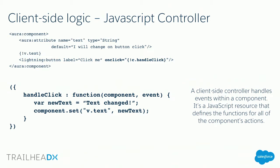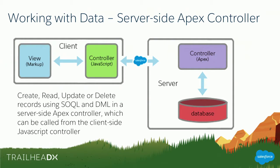What if you want to work with data inside components? Since Lightning is a client-side framework, you need to access the server to get data. You do that by calling an Apex controller you've created. You can create an Apex controller which can be called by the JavaScript controller inside the Lightning component. The Apex controller handles data retrieval and data manipulation. You call it, run it, get the result, and use it inside your component. The controller connects to the Apex controller, which accesses data through SOQL or DML and gives the client-side controller a response to work with.